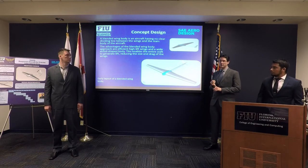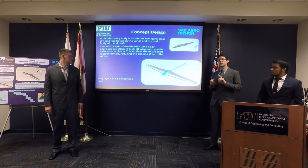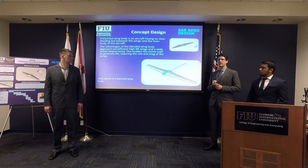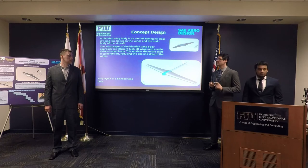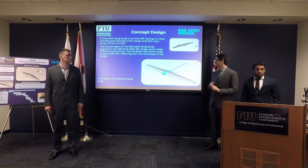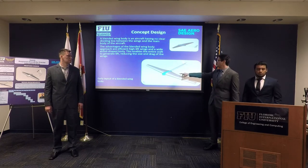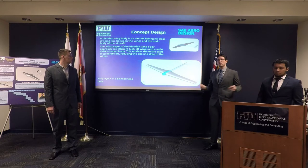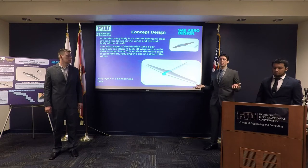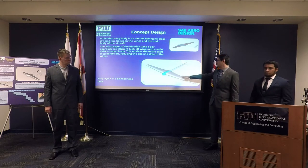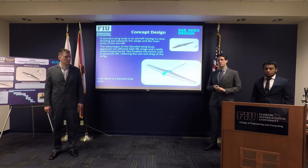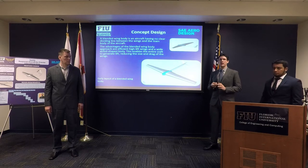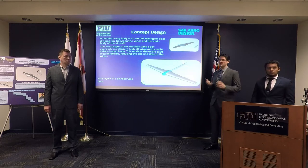All the electronics, the droppable dynamic payload system, the motor, and most of the systems are going to be housed in the center blue area. The static payload, which is going to be the bulk of the weight of the aircraft, is actually going to be placed inside of the wings to help with the wing loading and stress.